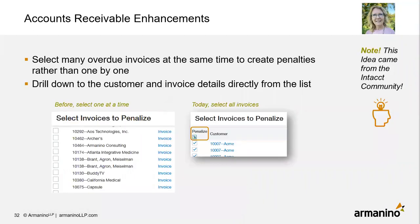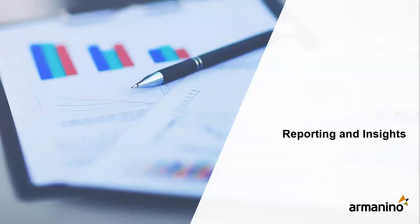The last accounts receivable enhancement: if you're calculating penalties, in the past you had to select each customer invoice individually. Now you have the option to select all invoices at once and then uncheck a few if that's faster for you.